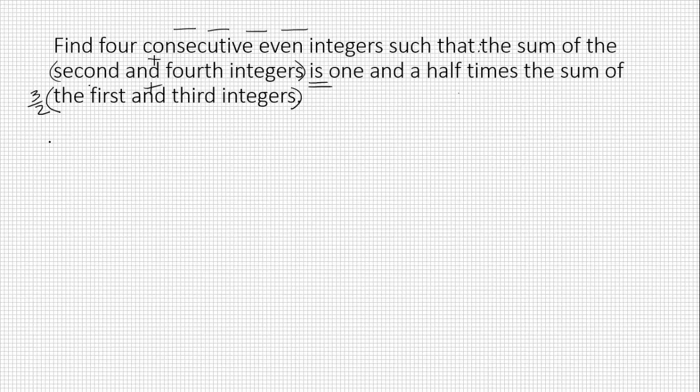So let's write out what we're looking for. We need variable expressions for four missing numbers, and then we're going to make an equation that means that the second number plus the fourth number is the same as one and a half or three halves times the first number plus the third number.